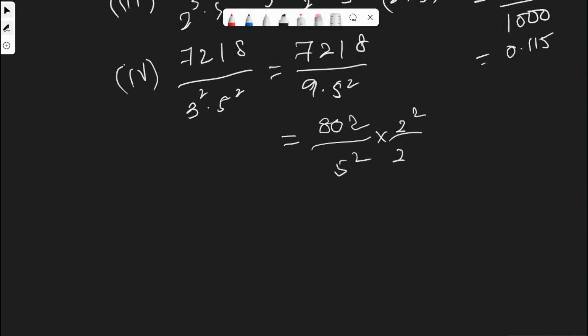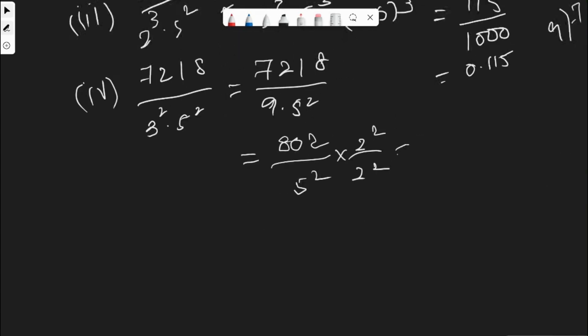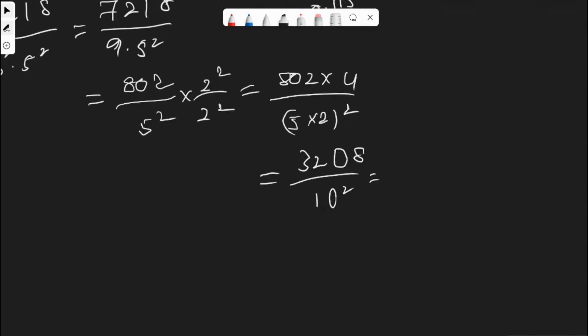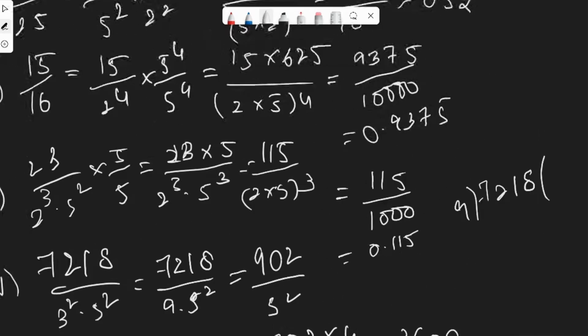We get 802 into 4 by 5 into 2 whole square. We get 3208 by 10 square, which is 100. So 3208 by 100 is equal to 32.08.